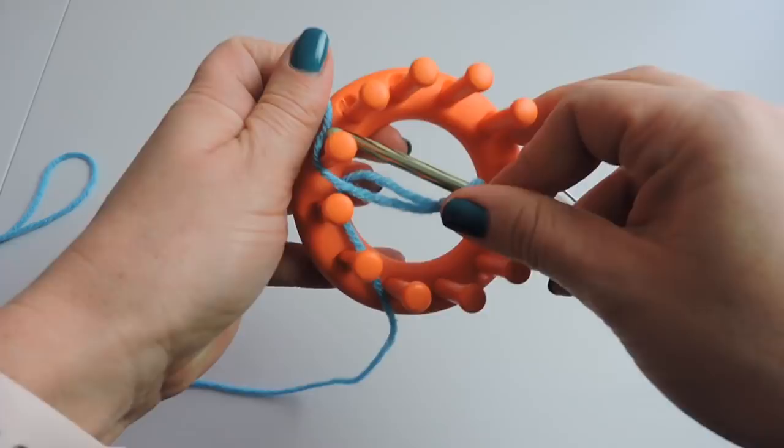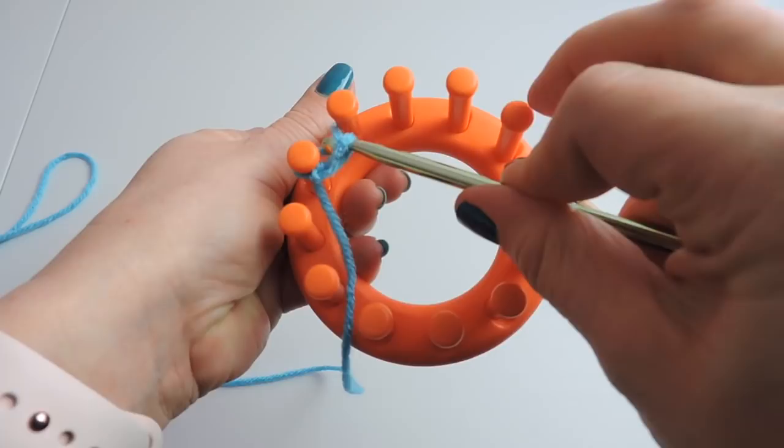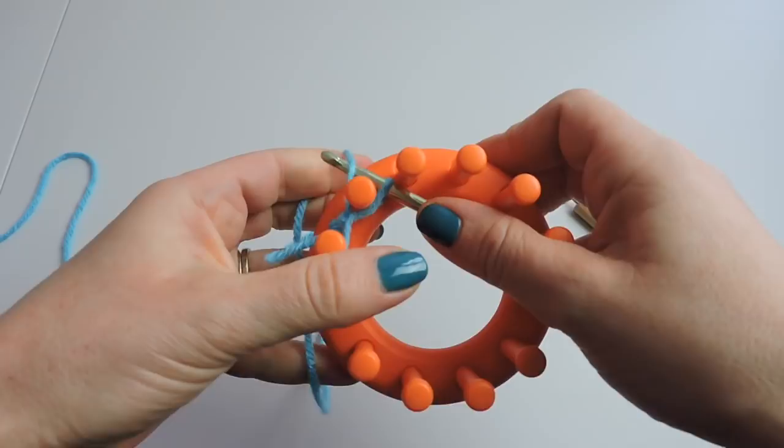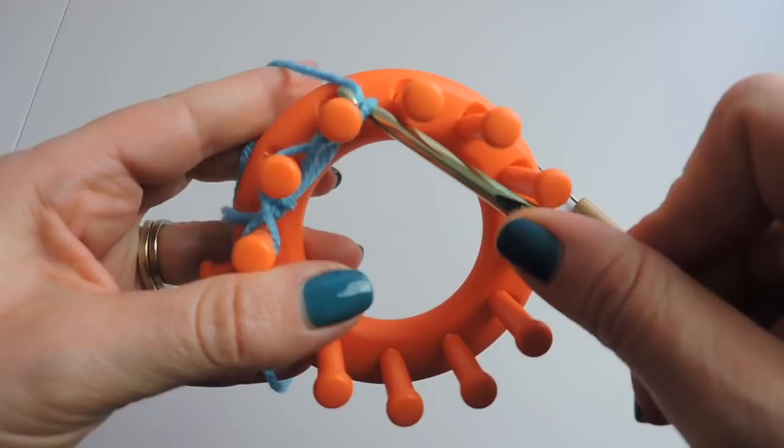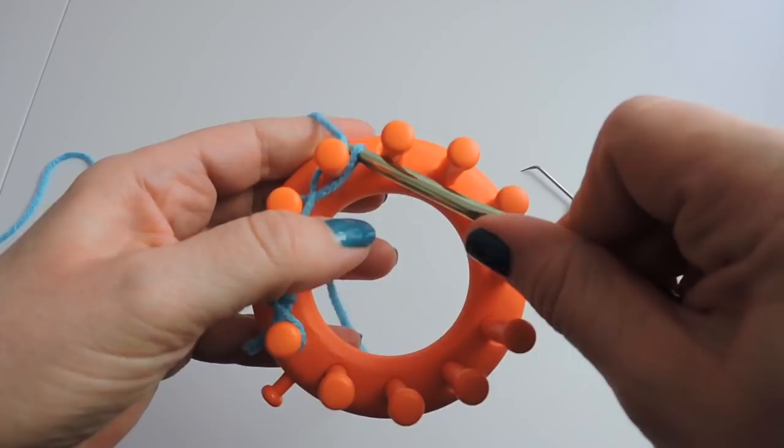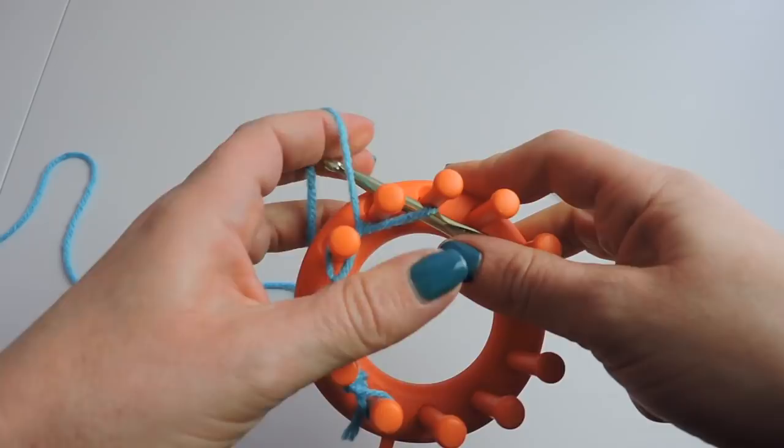So we're going to start with peg one and we're going to wrap peg one around the slipknot and take the crochet hook with the working yarn and pull it through the loop. Then we'll go to peg two and do the same thing. We're just grabbing that working yarn and pulling it through the loop on the crochet hook. We're working from the inside of the loom.